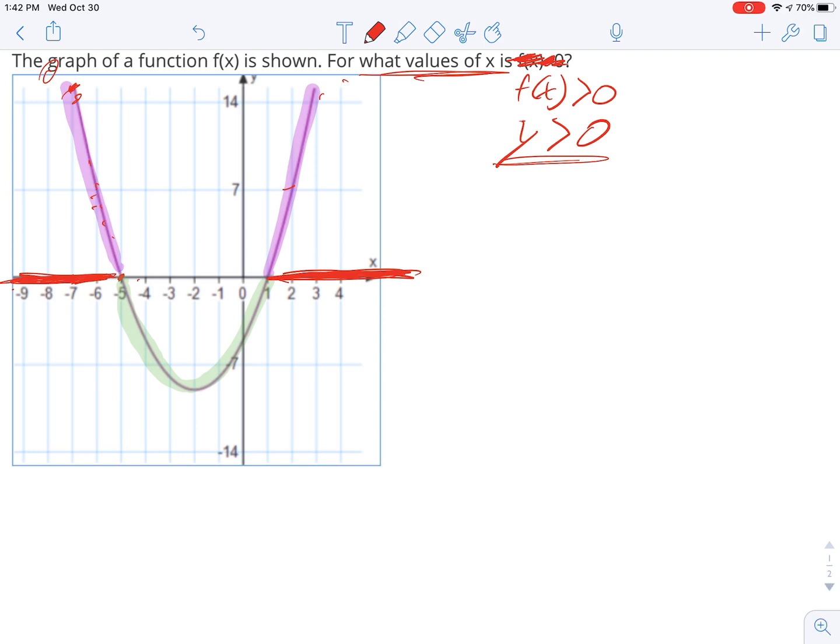And so there's two different intervals where the x values that you put in get you y values that are positive. And that's what this question is asking for. When is the function's output f of x or y greater than 0? And so it's two different intervals. It's all the numbers from negative infinity to negative 5, right? So that represents all of those.